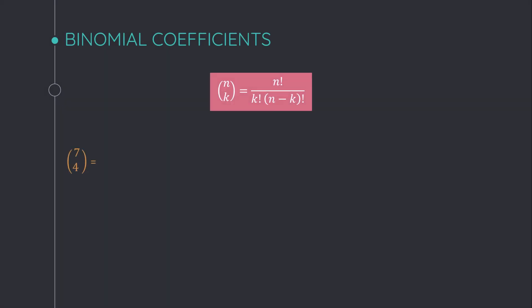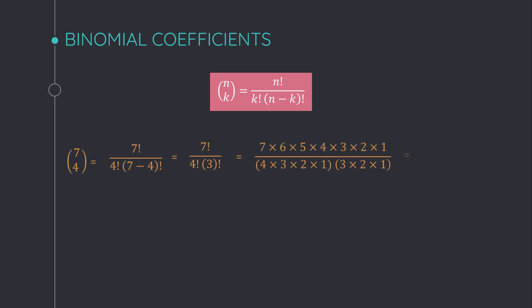Now let me explain some examples and how to simplify. 7 choose 4: according to the definition, this is factorial 7 divided by factorial 4 times factorial (7 minus 4). We can expand factorial 7 as 7 times 6 times down to 1, then simplify with factorial 4 and factorial 3. The answer is 35.